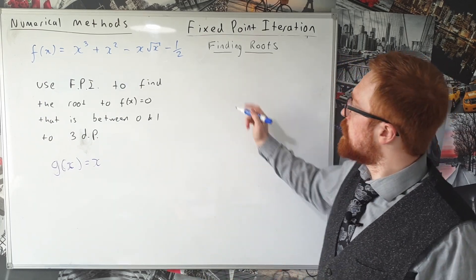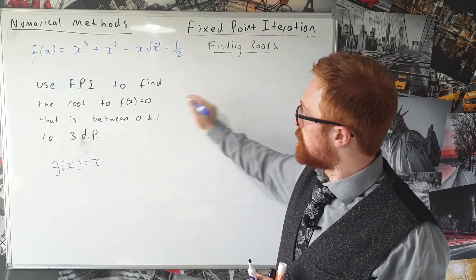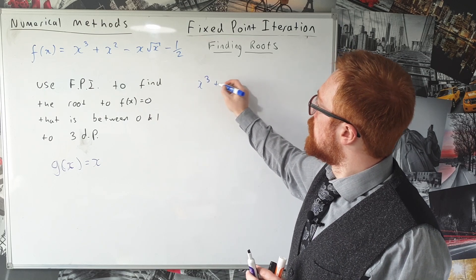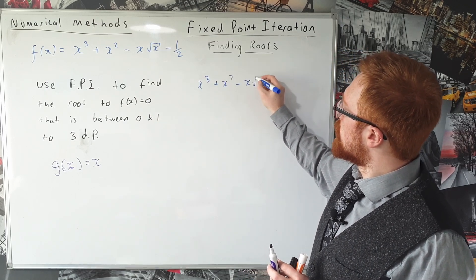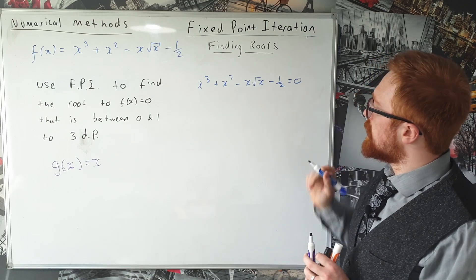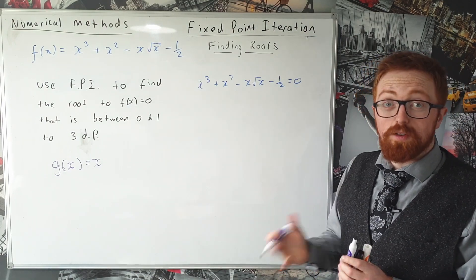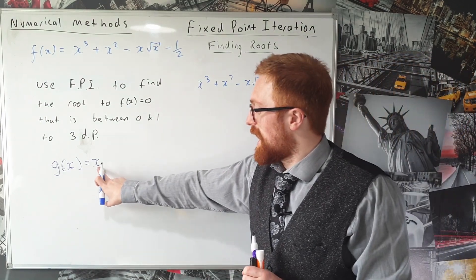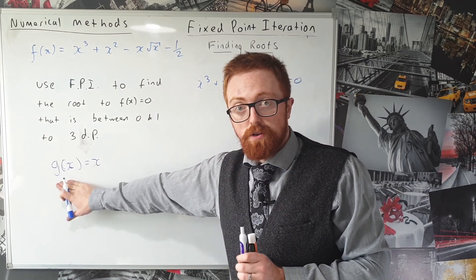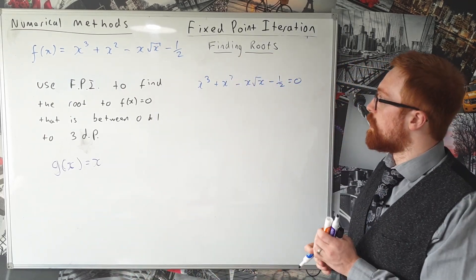So if we start with what we're trying to find: x³ + x² - x√x - 1/2 equals zero. What we need to do is rearrange that so that it's x equal to some function, and then our fixed point iteration will work.